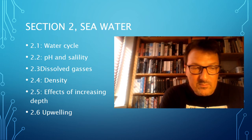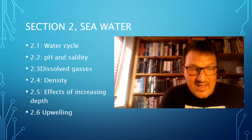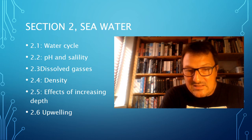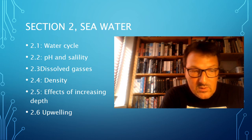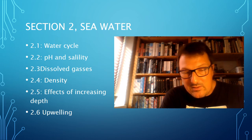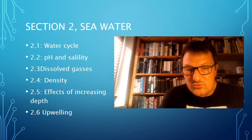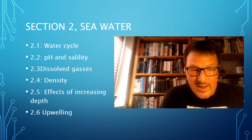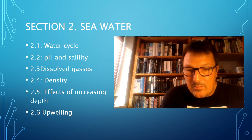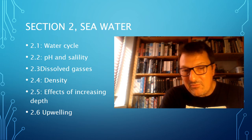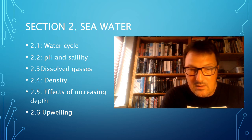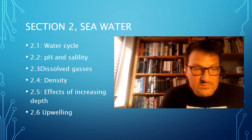2.3 looks at dissolved gases, where we look mainly at CO2 and carbon dioxide. We're going to look at how concentration in the atmosphere and concentration in water are intertwined, and also how temperature and pressure can affect the concentration of dissolved gases.